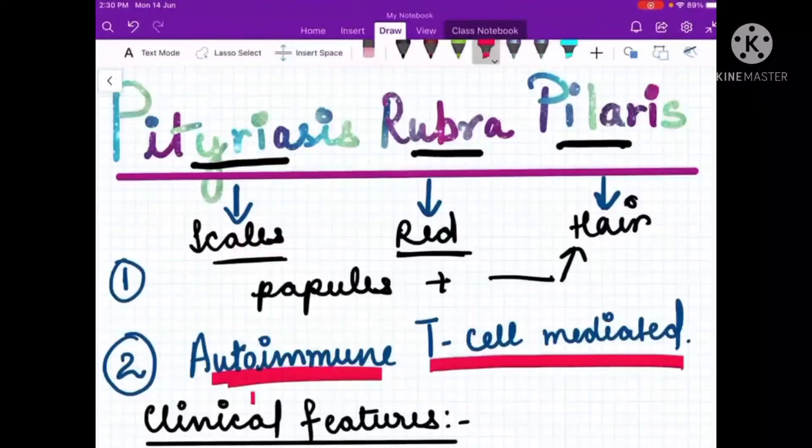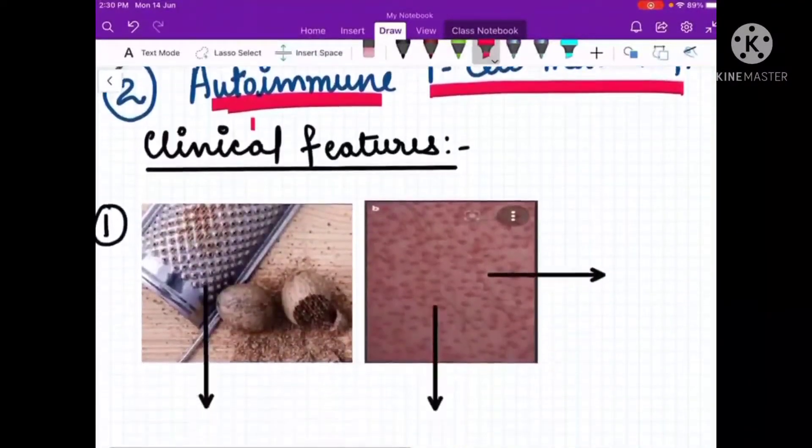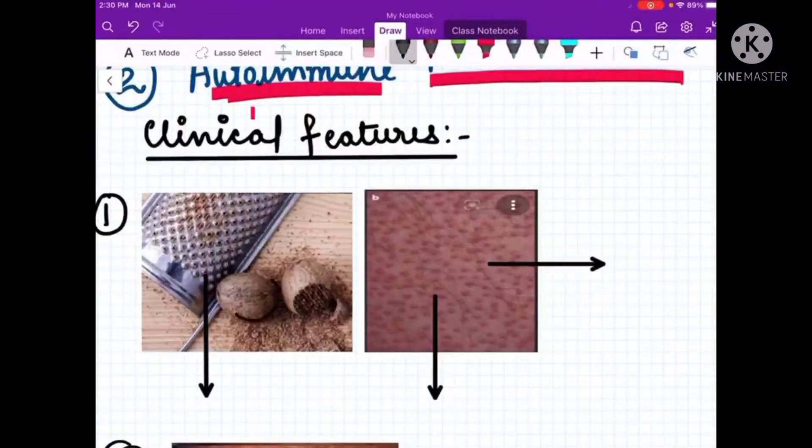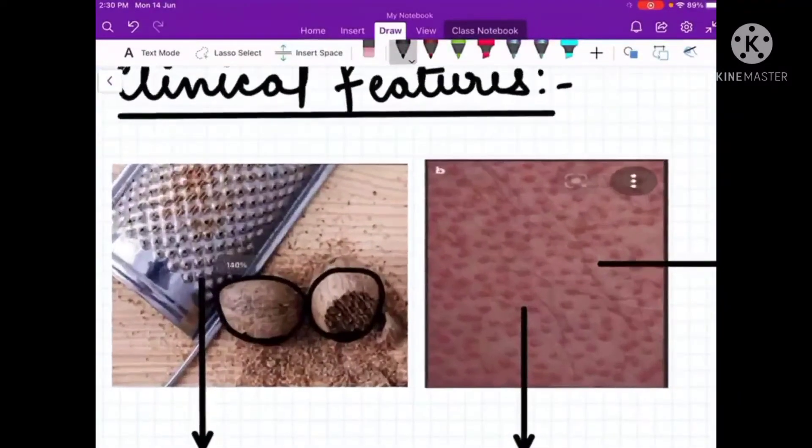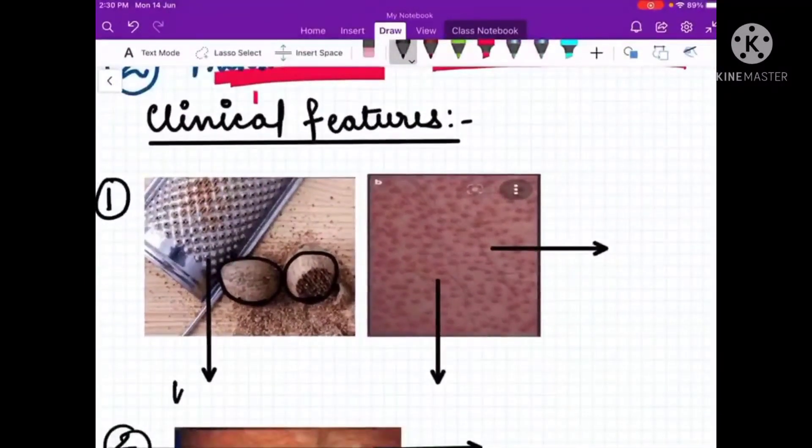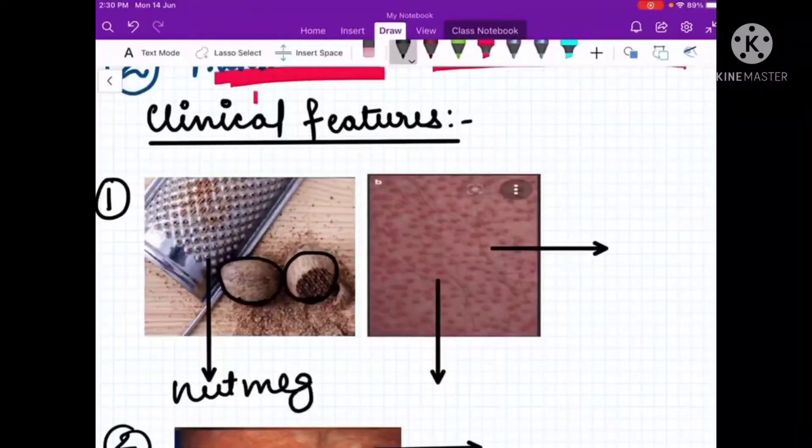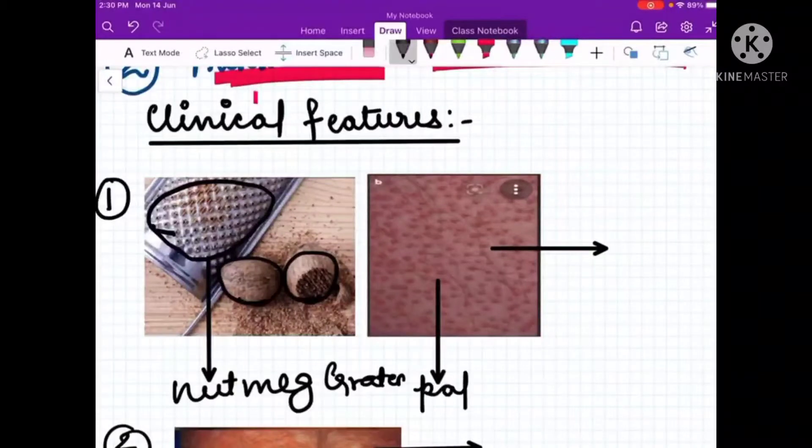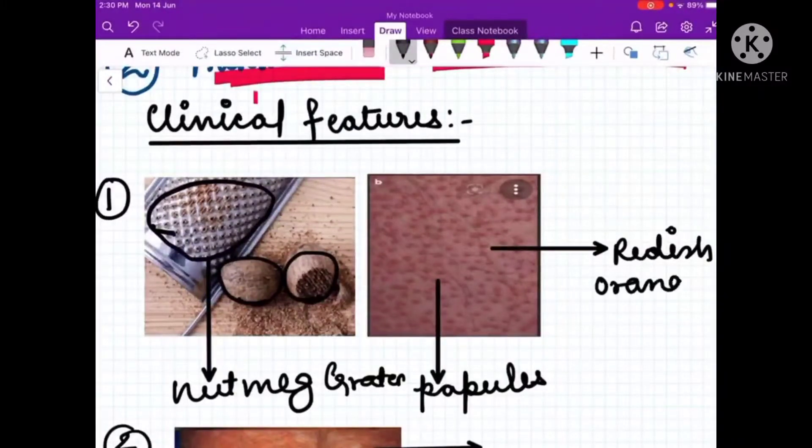What are the clinical features? As we see in this picture, this is basically a nutmeg and this is a nutmeg grater. Here what we see are papules and these papules are reddish orange in color. So this condition has classical nutmeg grater papules.